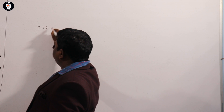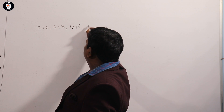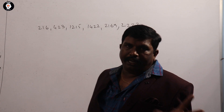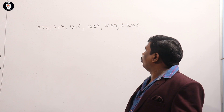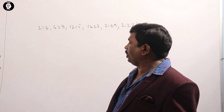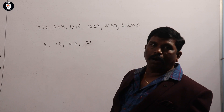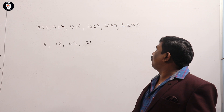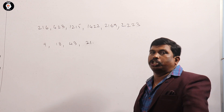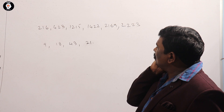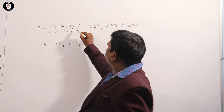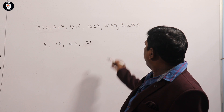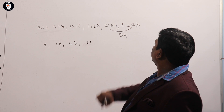One more example: 216, 423, 1215, 1422, 2169, 2223. Options are 9, 18, 43, and 21. First, check minimum differences among the numbers. The differences are: 207, 3, 207, and 54.